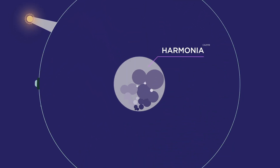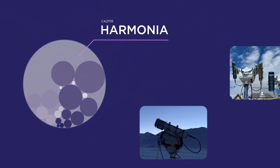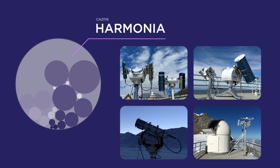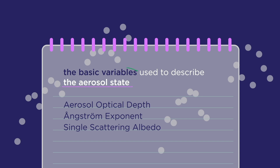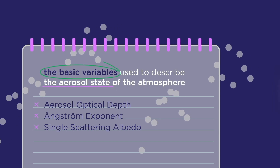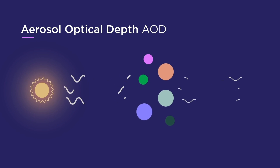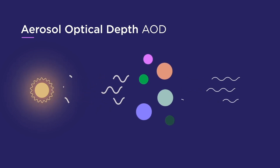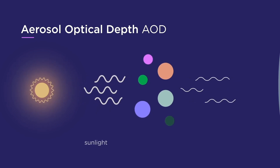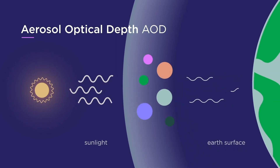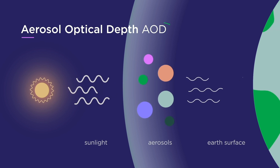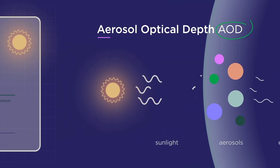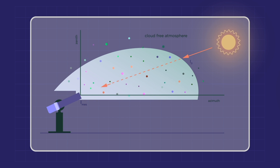In the Harmonia action, we focus on optical properties which are measured from sun photometers. The basic variables used to describe the aerosol state of the atmosphere are the following. Aerosol optical depth, or AOD — how much sunlight is prevented from reaching Earth's surface due to aerosols. This is estimated by the aerosol optical depth, or AOD. It is an indirect approach to understand how many aerosols are present in the whole atmosphere.